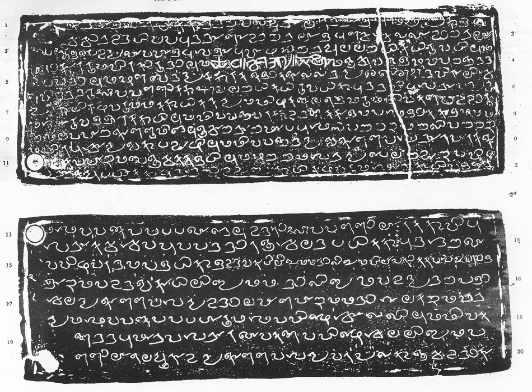The Vatteluttu, also spelled Vatteluttu, Tamil pronunciation, Malayalam: Vatteluttu, was an Abugida writing system in southern India and Sri Lanka in the latter half of the first millennium AD.